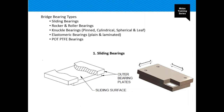The various kinds of bearings can be classified on the basis of their material and on the basis of the degree of freedom they offer. The various kinds of bearings are: sliding bearings, rocker and roller bearings, knuckle bearings, elastomeric bearings, and pot PTFE bearings.